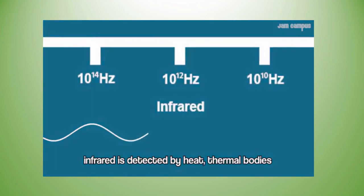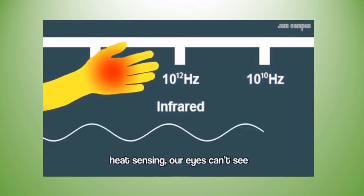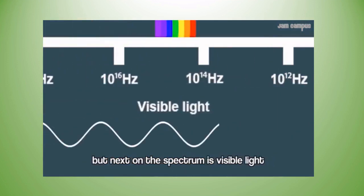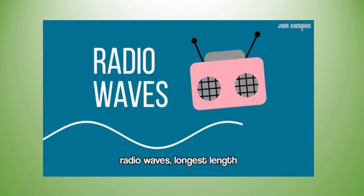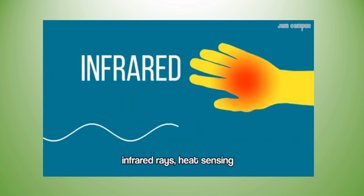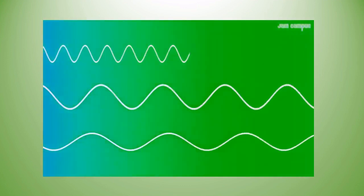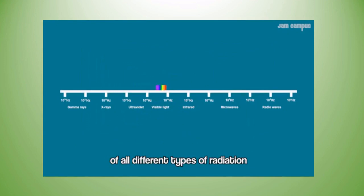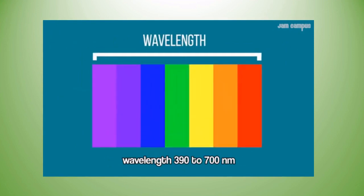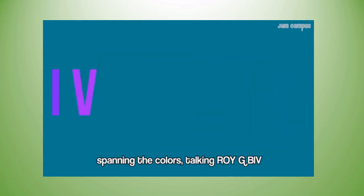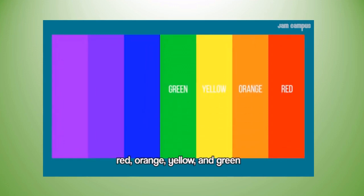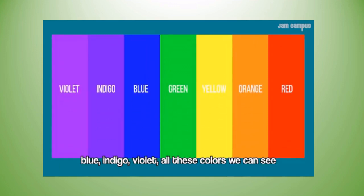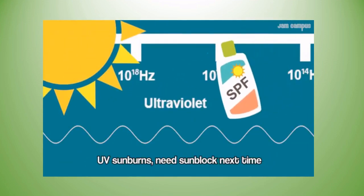Infrared is detected by heat and our bodies. Heat-sensing — our eyes can't see it. Next on the spectrum is visible light — colored light. Visible light is a small fraction of all the different types of radiation, with wavelengths from 390 to 700 nanometers, spanning the color spectrum. Visible light frequency is 432 to 790 terahertz — red, orange, yellow, green, blue, indigo, violet. Ultraviolet light is next — UV needs sunscreen. X-rays penetrate through mild and softer tissue; doctors use them to see bones inside you. Most dangerous are gamma rays — the shortest waves, most energetic.